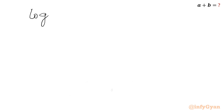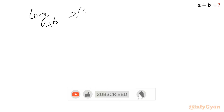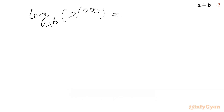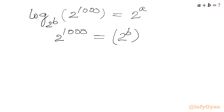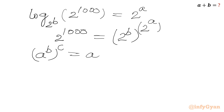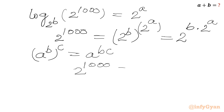So log base 2^b of 2^1000 equals 2^a. Using the same log property again, we can write 2^1000 equals (2^b)^(2^a). Again applying the exponential property a^b whole power c equals a^(bc), we get 2^1000 equals 2^(b · 2^a).